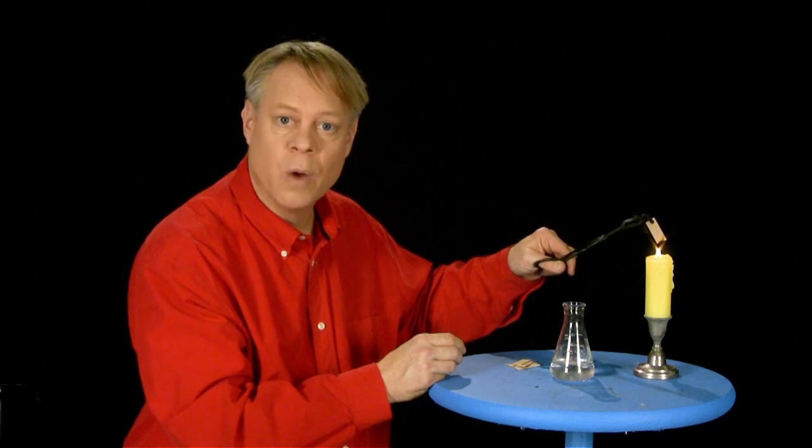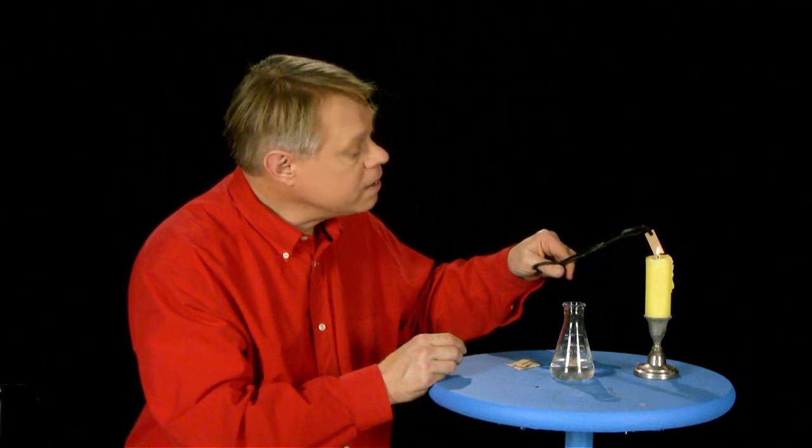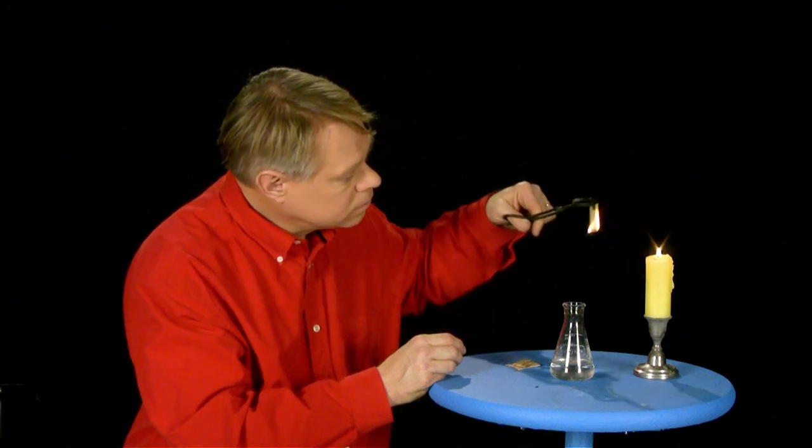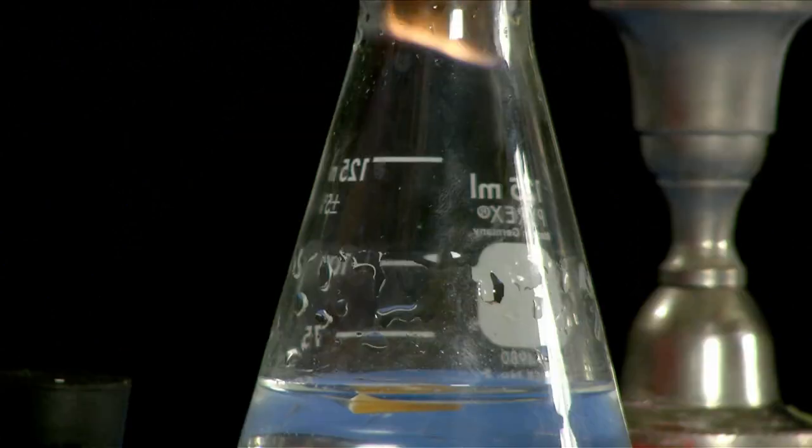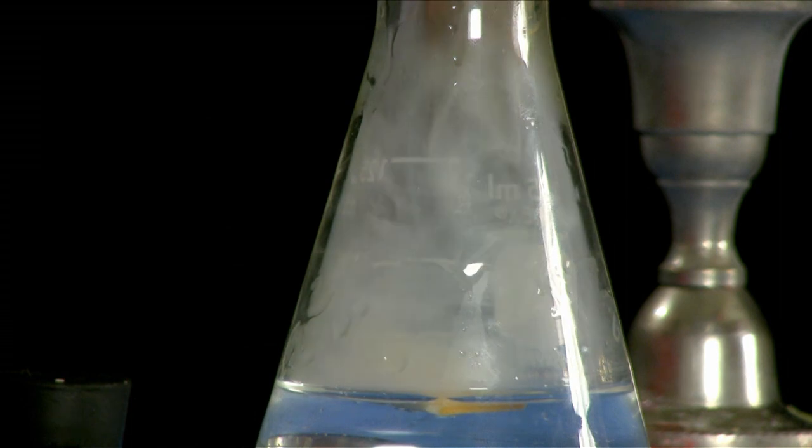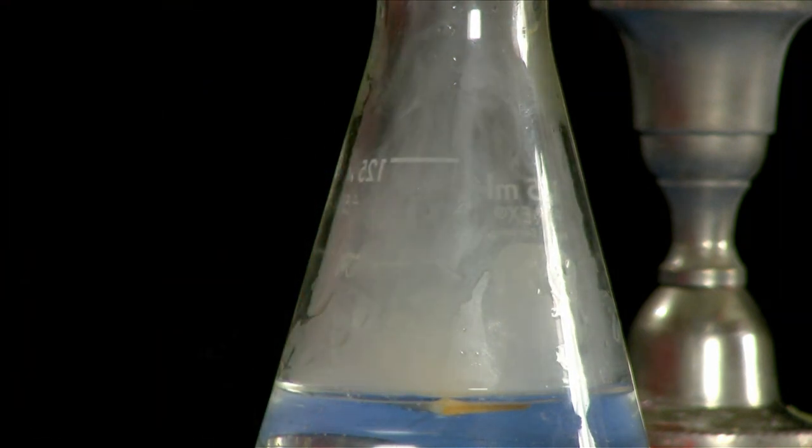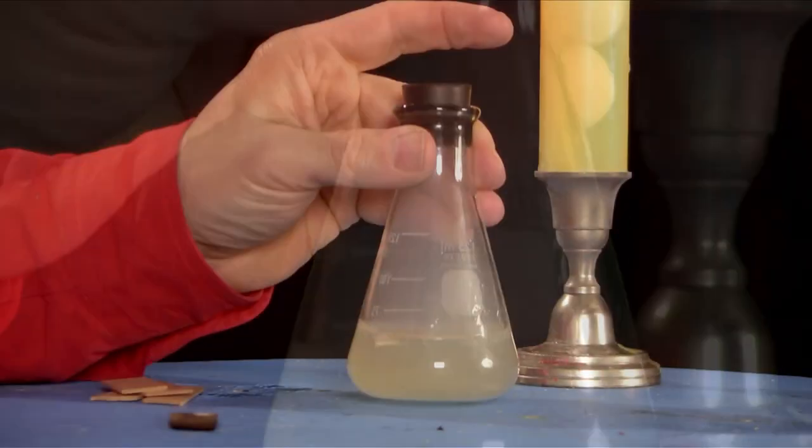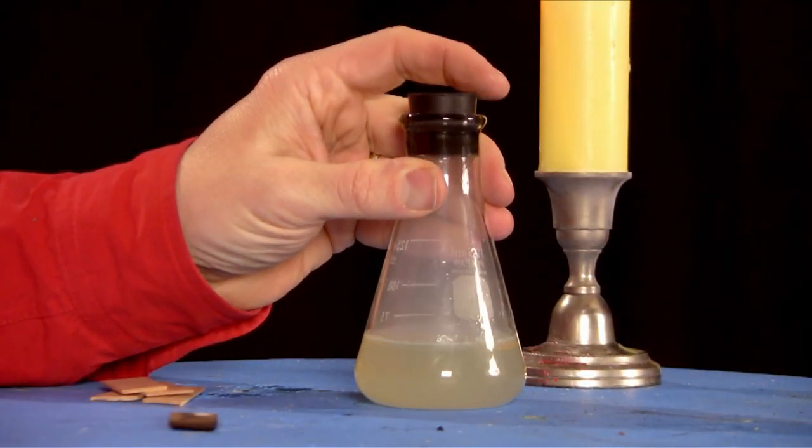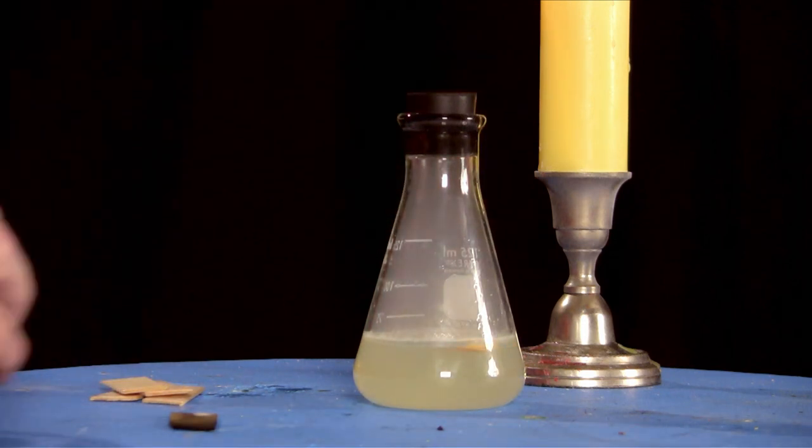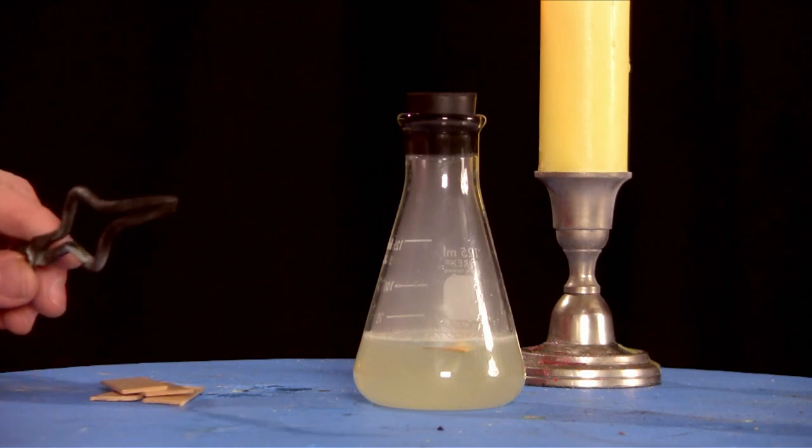But suppose I burn the piece of wood in the air of that bottle. You, of course, know that I get water. Do I get carbon dioxide? There it is, the carbonate of lime, which results from carbon dioxide. And that carbon dioxide must be formed from the carbon which comes from the wood, from the candle or any other thing.